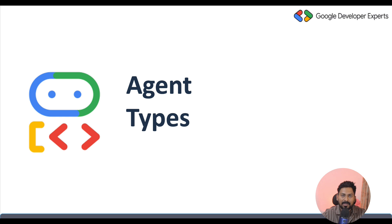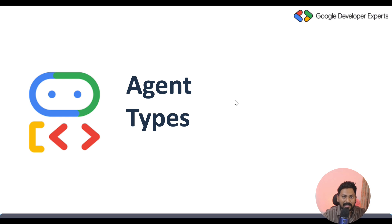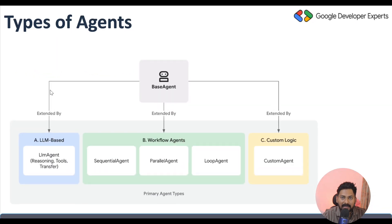Now we are going one step ahead. In this video we are going to discuss the different types of agents available in ADK. Till now we worked with the basic LLM agent, but there are other agent types needed for certain tasks. On screen you can see the different types of agents in ADK, broadly categorized into three sections: LLM agent, workflow agent, and custom agent.